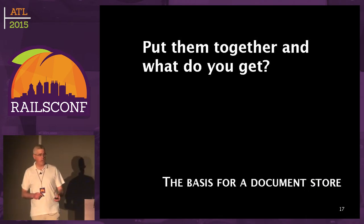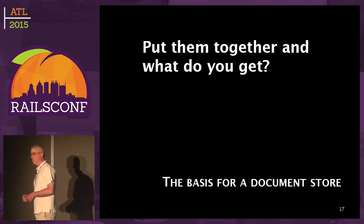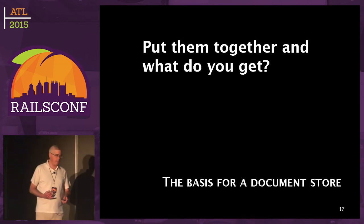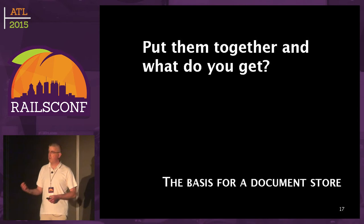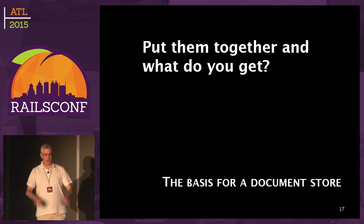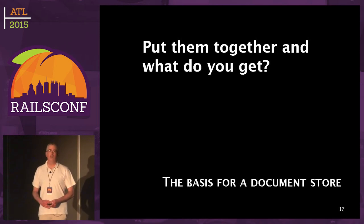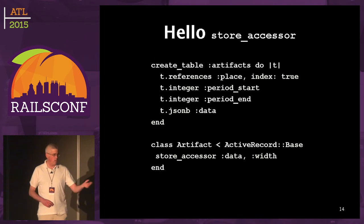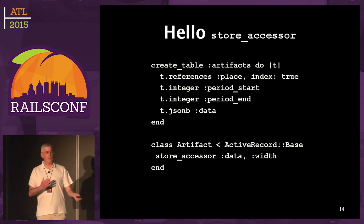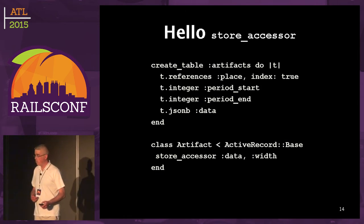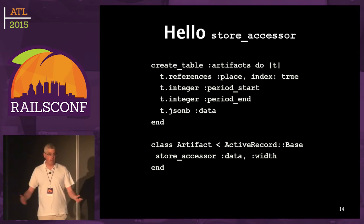Put them together and what do you get? The basis for a document store. A document store is where you don't necessarily have a schema defined in the database, but you have it defined in the model — it says it has these keys, and there are no columns in the database. I wanted to emphasize that this is a hybrid schema-mix type document store. Using the JSON column doesn't mean you can't also use regular columns in ActiveRecord.